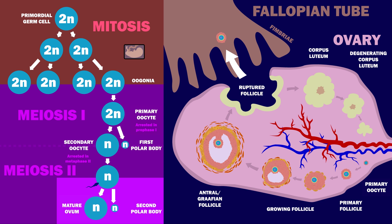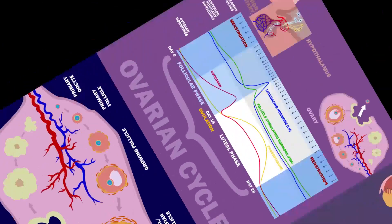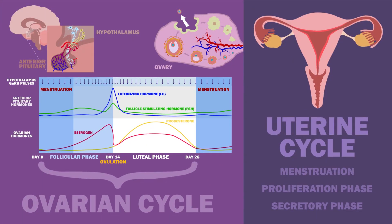These primary oocytes halt in prophase I of meiosis and remain that way until puberty. After menarche, the first occurrence of menstruation, a few of these primary oocytes will continue development with each menstrual cycle.